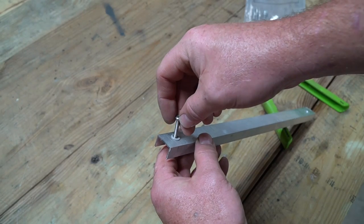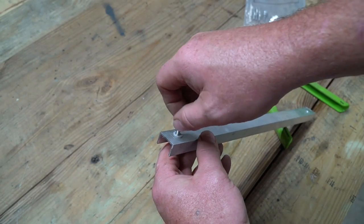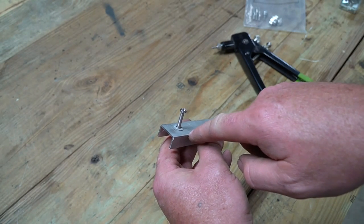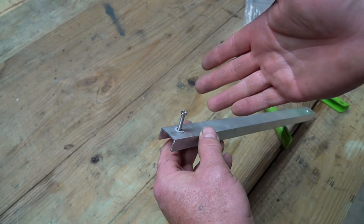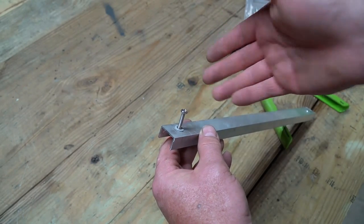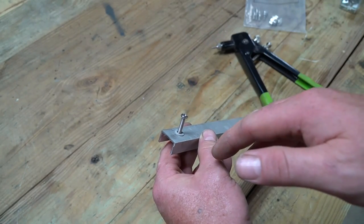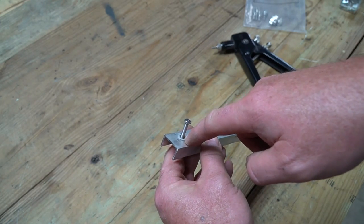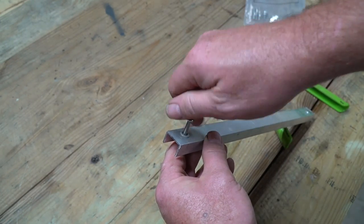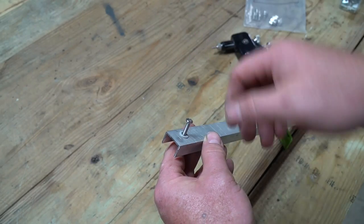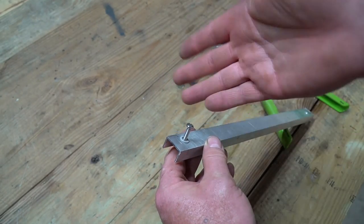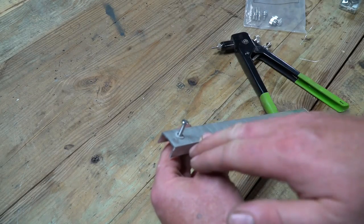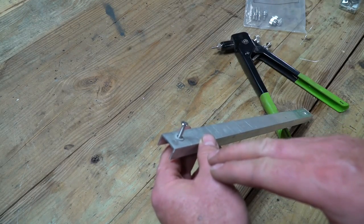So why would you want a threaded insert? Well there are situations like this is a piece of aluminum. It's pretty thin and you can't really drill and tap it because there wouldn't be enough threads to hold anything, and aluminum is a lot weaker than steel. But by putting this nutsert in here, this threaded insert, you have a really good nut that's going to hold and stay and you can fasten another piece to it or bolt something else down or hang something from it. It's just a good way to get threads into something that you normally wouldn't be able to get threads into.